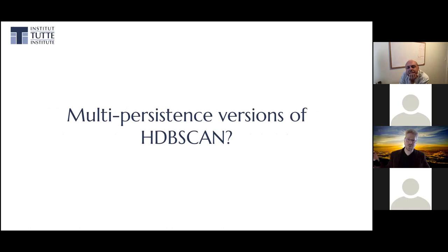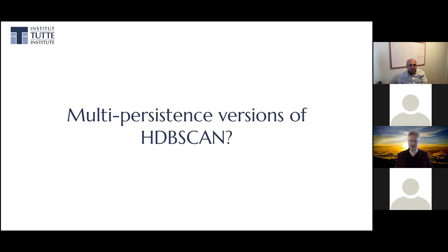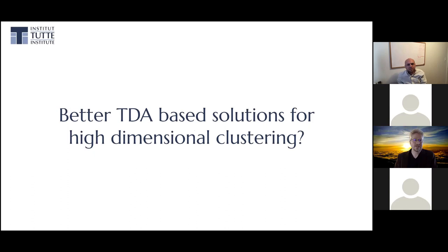Remember that fixed value of K? What else can we do? A multi-persistent version of HDBSCAN — we held K fixed and persisted across epsilon, but that selection of K is also an awkward parameter. It would be really nice to do multi-dimensional persistence across both epsilon and K simultaneously and find the proper notion of natural clustering. It would be interesting to apply those kinds of results at larger scales to this kind of problem.